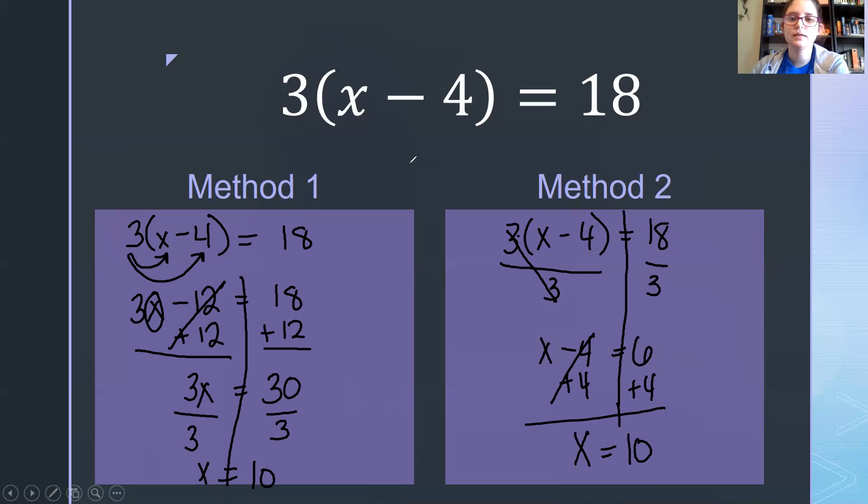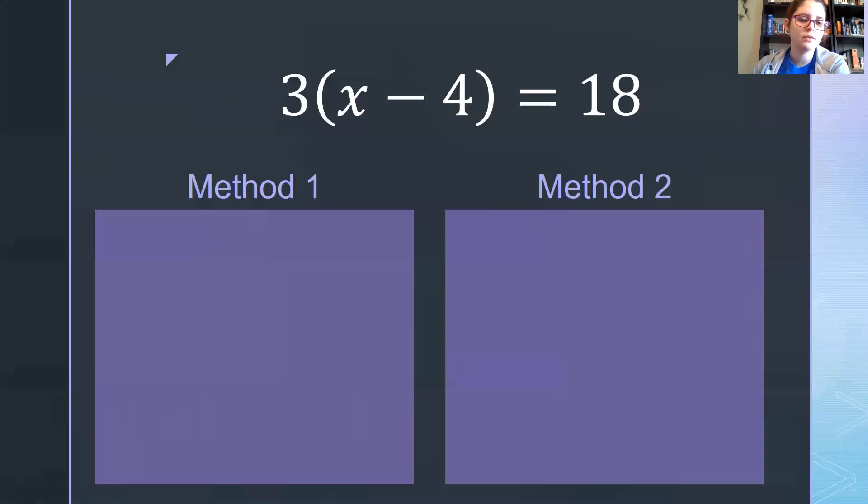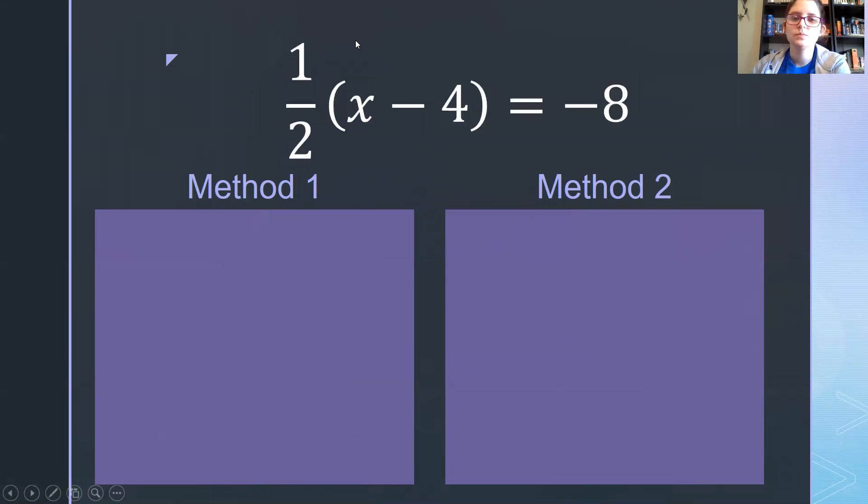Let's look at a second example that contains where we're going to do both methods. This one has a fraction in it. So in method one, we're going to distribute the one half to everything inside of the parentheses. So we're going to multiply all of these by the one half. So one half times x is one half x.